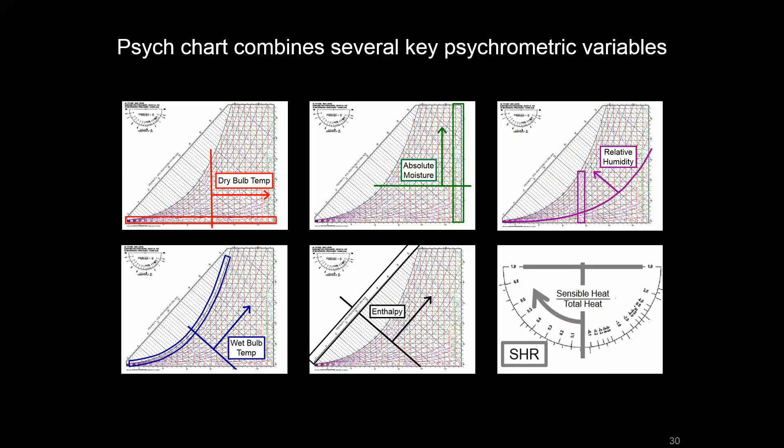Unlike a typical Cartesian chart where we're looking at x and y axes, we have many more crammed into this chart here, which makes it very dense, very useful, but also a bit confusing. We're going to go over the labels here as to what they represent and how to read the psych chart.